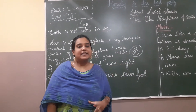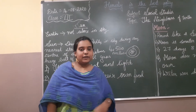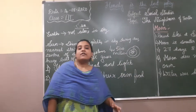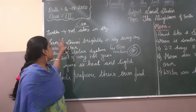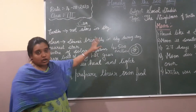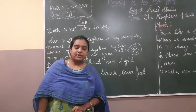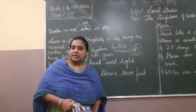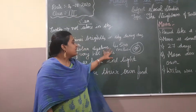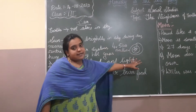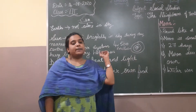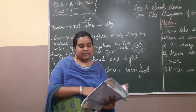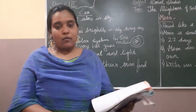The sun has been formed with gases — we will be learning more in a further class. First of all, the earth is not alone in the sky. The sun and all the planets are revolving around the sun. This is about page number 199, lesson number 3: The Neighbors of Earth.